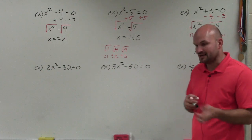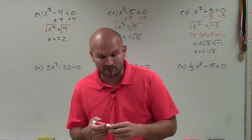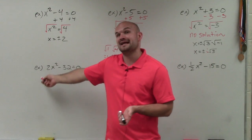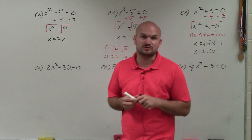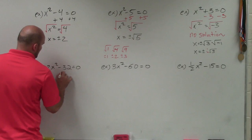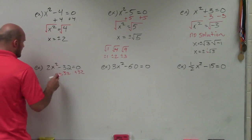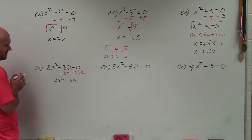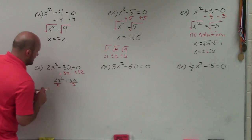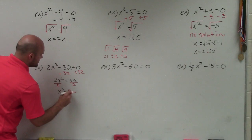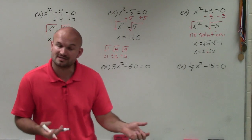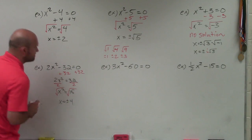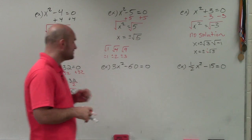In the next three examples, we're going to have a little bit more operations. In the first one, we have two operations happening to the variable x — it's being subtracted by 32 and multiplied by 2. Using the reverse order of operations, we undo addition and subtraction first, so I'll add 32 first and I'm left with 2x squared equals 32. Now I divide by 2, and I get x squared equals 16. Since 16 is a perfect square, when I take the square root of both sides, I get x equals plus or minus 4. Remember that plus or minus — very important.